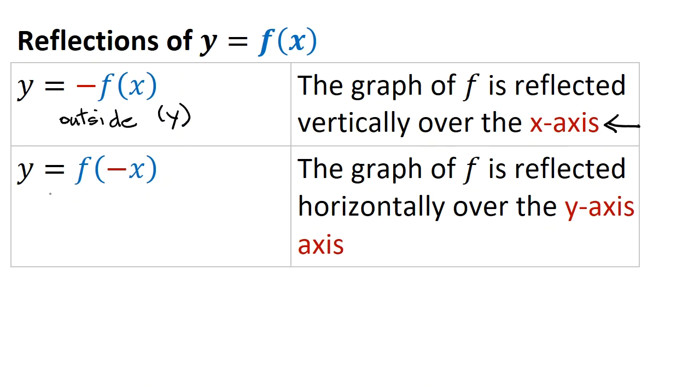Now if I have it inside the argument of the function, this is going to make a change. It's going to just impact the x coordinate here. And if I go from left of the y axis over to the right of the y axis or vice versa, then that's going to flip or reflect horizontally over the y axis.